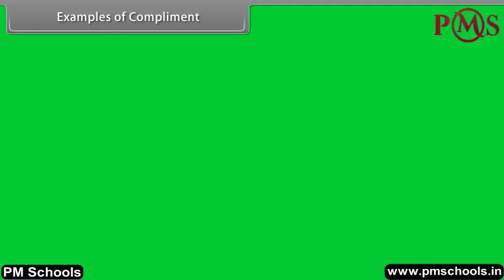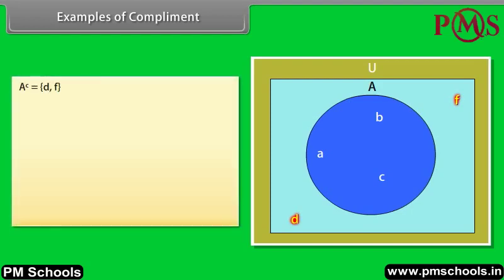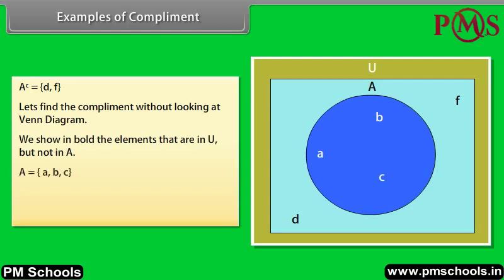Examples of complement. Take a close look at the figure. D and F are in U but they are not in A. Therefore, complement of A is equal to {D, F}. Let's find the complement without looking at a Venn diagram. We show in bold the elements that are in U but not in A. A is equal to {A, B, C}; U is equal to {A, B, C, D, F}. So, complement of A is {D, F}.